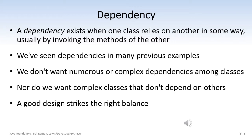A dependency exists when one class relies on another in some way, usually by invoking the methods of the other class. We've seen dependencies in many previous examples. We don't want numerous or very complex dependencies among our classes. However, we also don't want complex classes that have no dependency on others. So there is a balancing act, and a good program design strikes the balance between too many or too complex dependencies among classes or having very complex classes that have no dependencies or minimum dependencies on others.